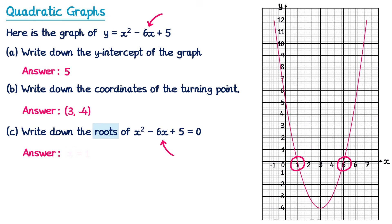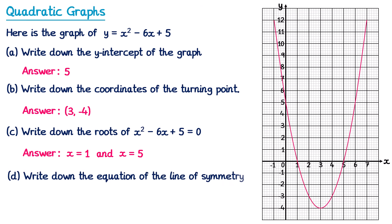This means x equals 1 and x equals 5 are the solutions — the roots. To find the roots of the equation, since it matches the equation of the graph, we just find where the graph crosses the x-axis. For the final part we need to write down the equation of the line of symmetry. All quadratic graphs have a line of symmetry through the turning point. We draw a vertical line through the turning point. All vertical lines are of the form x equals some number — the number where it crosses the x-axis. This line crosses at 3, so the equation is x equals 3.